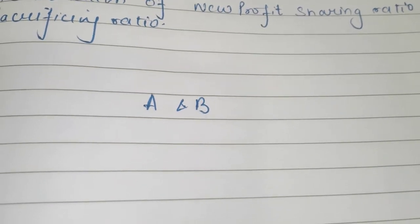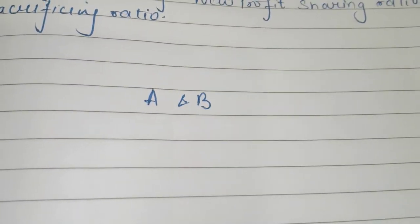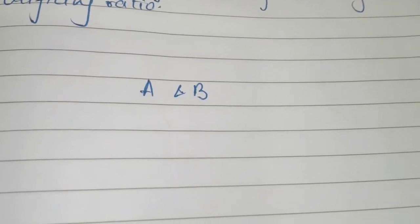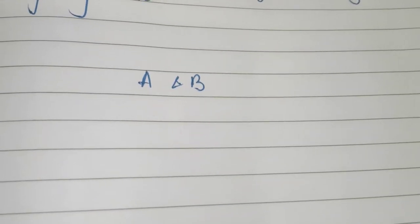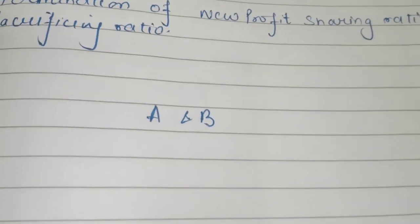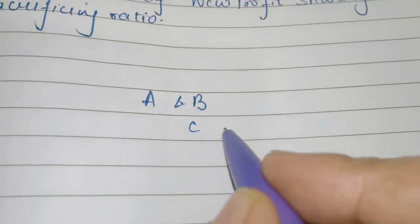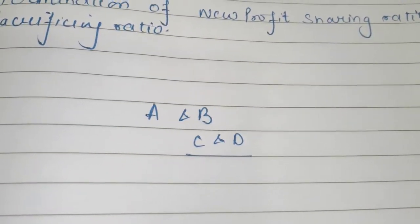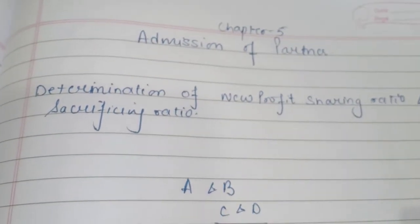They may not be capable in one type of skill, so they want to admit another person who is capable and able to handle the business more efficiently. Sometimes they are not able to devote proper time. So due to some reason there is a need to admit a partner. If you admit C and D as two new partners, this is known as admission of a partner.